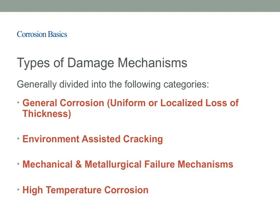Let's take a closer look at the different damage mechanisms involved in corrosion. Generally, we can divide these mechanisms into several key categories. First, there's general corrosion, which involves a uniform or localized loss of material thickness across a surface — the metal can be thinned evenly or in specific spots depending on the environment. Next, we have environment-assisted cracking, where external factors like stress or specific environmental conditions cause cracks to develop and propagate in the material.